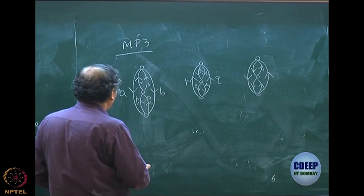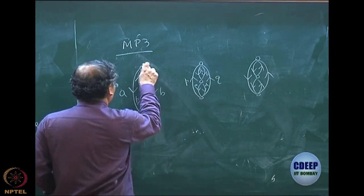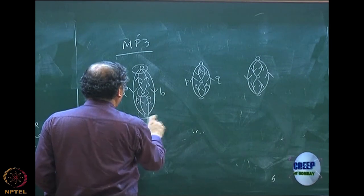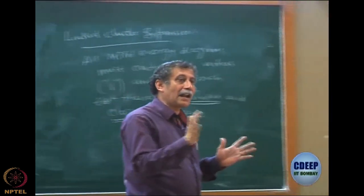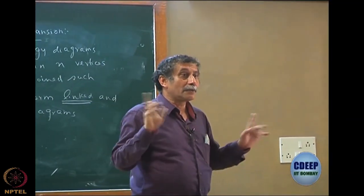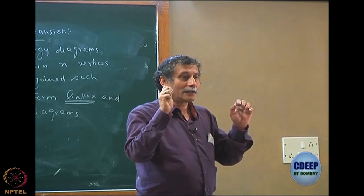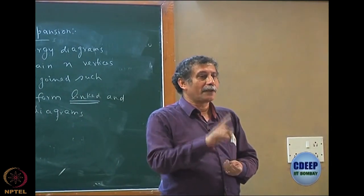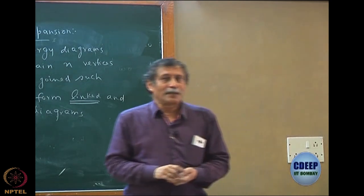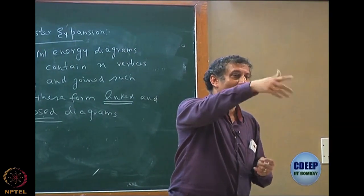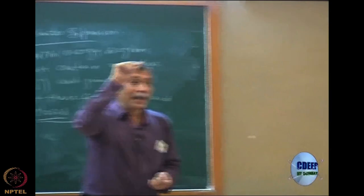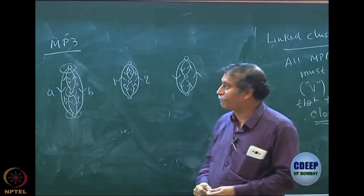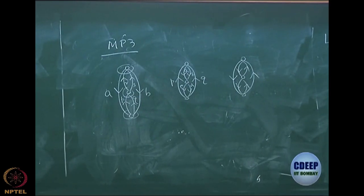The rule is that the number of creation and annihilation operators must be the same for every diagram. Every vertex has two creation and two annihilation operators — that must be identical. So these are the three diagrams which I can draw for MP3 — three possibilities, nothing else. There is no other skeleton possible.